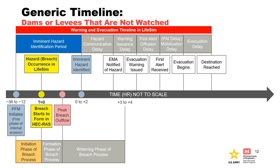Here is the remainder of the warning and evacuation timeline in LifeSim. The time periods can move relative to each other and are unique to each emergency management agency, therefore they are not shown to a specific time. However, in a relative sense, the time periods for the remainder of the warning and evacuation timeline occur after breach formation and peak breach outflow. The available time to reach a safe destination can be significantly reduced for this scenario, resulting in greater likelihood of fatalities.